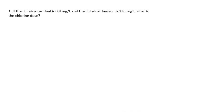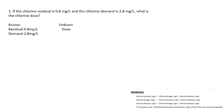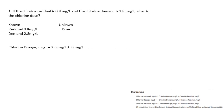Question number one: if the chlorine residual is 0.8 mg/L and the chlorine demand is 2.8 mg/L, what is the chlorine dose? The knowns are the residual of 0.8 mg/L and the demand of 2.8 mg/L; the unknown is the dose. Chlorine dosage equals chlorine demand plus chlorine residual. Plugging in 2.8 mg/L plus 0.8 mg/L gives a dosage of 3.6 mg/L.